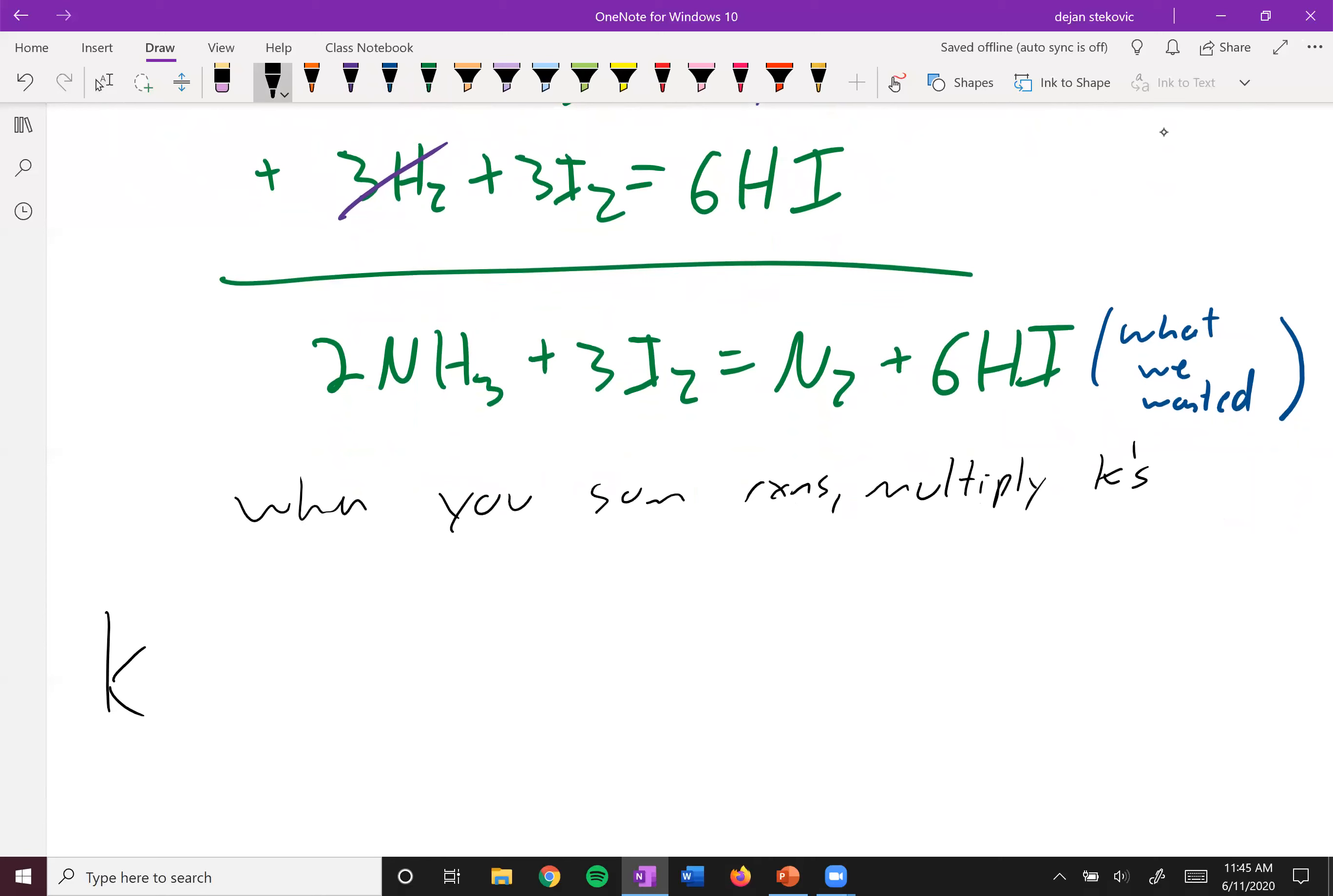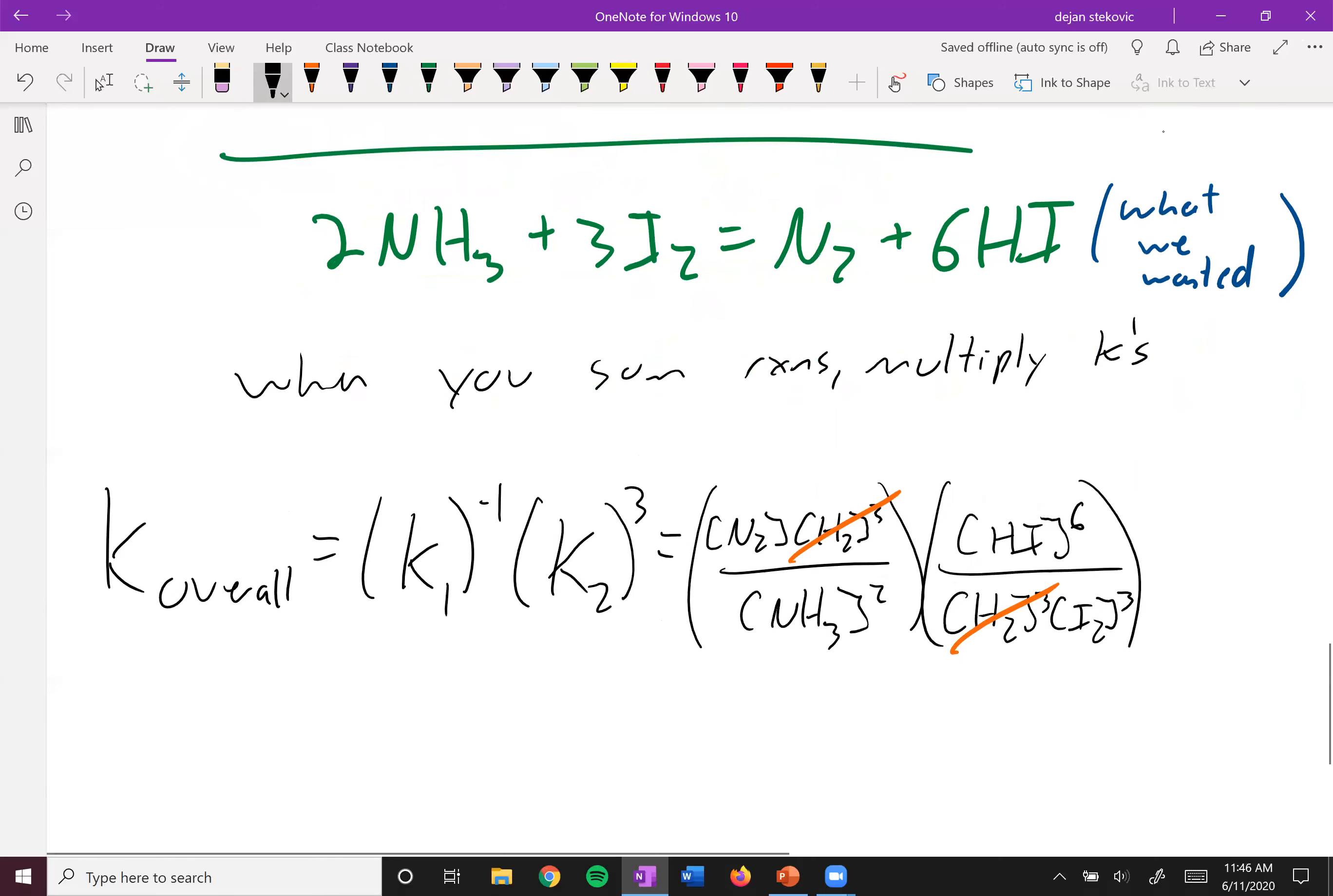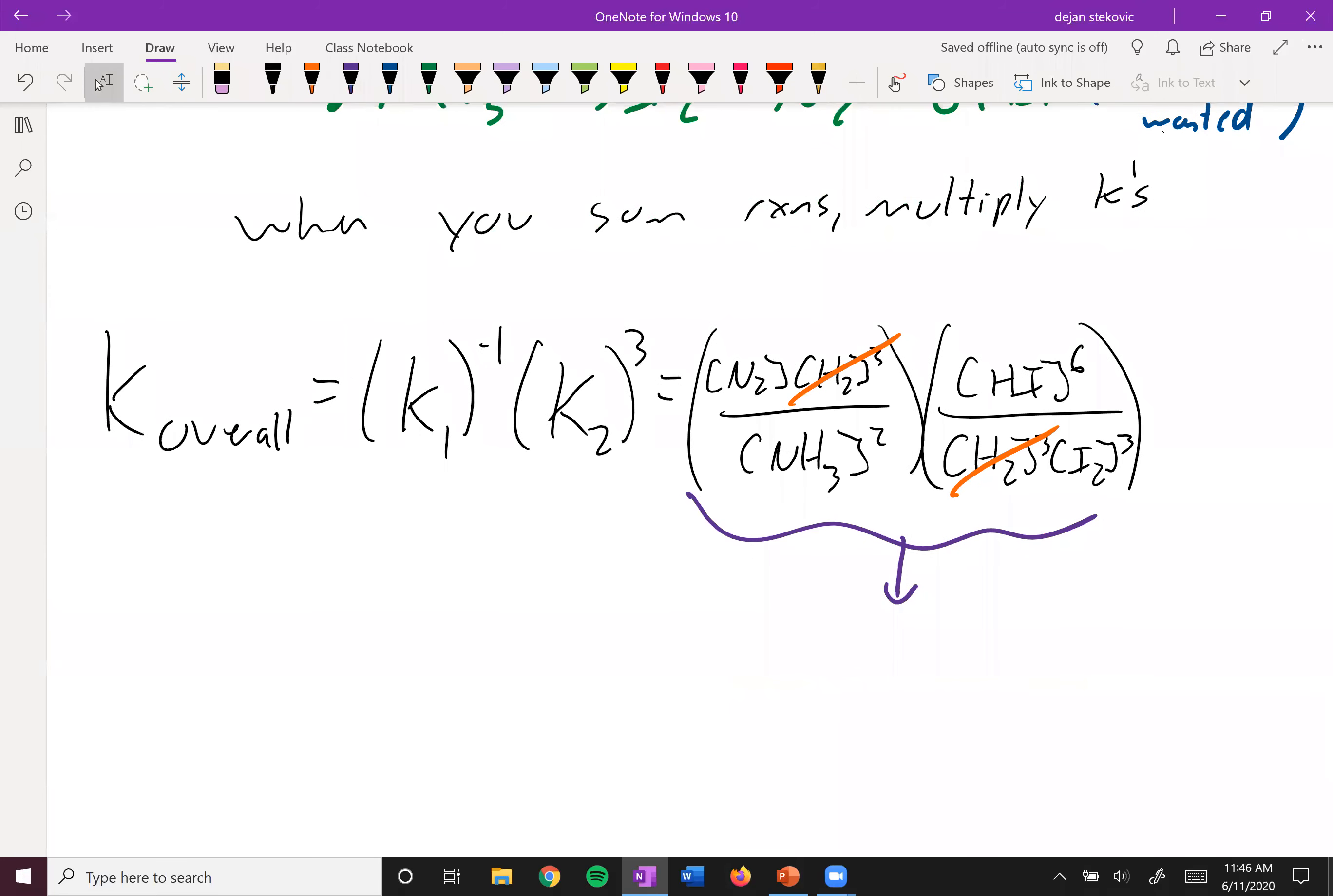And I'll show you why. So we can say that this K overall is equal to our original K1 to the negative one because we took that inverse times K2 cubed because we tripled it. And so if we write the actual Ks for this stuff, we flip this one. So we'll have N2 up here, H2 cubed up here over NH3 squared. And then K2, when we triple it, we'll have HI to the sixth, H2 cubed, I2 cubed. And then these H2s will cancel out. And then if you actually go ahead and sum this, kind of multiply them all throughout, you'll get N2 HI to the sixth over NH3 squared times I2 cubed.